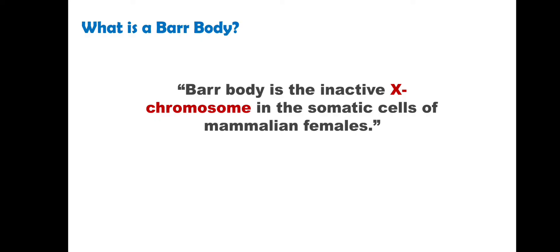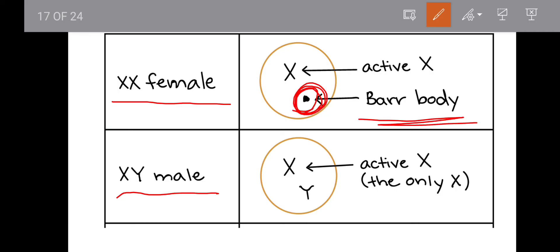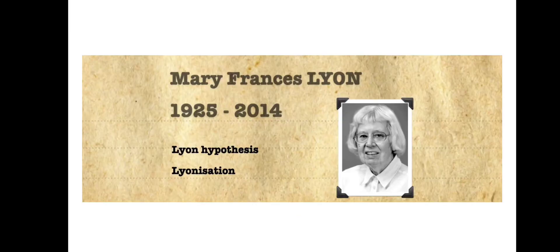In females with two X chromosomes, one X chromosome is inactive. That inactive X chromosome is the Barr body. So the Barr body is present in females. In this picture, you can see the XX female and the XY male. In males, there is one X and one Y, so there is no inactivation — one X chromosome is active. In females, one X is active and one X is inactivated — that is the Barr body. This is the X inactivation process.